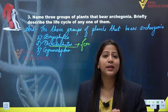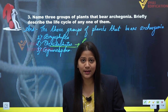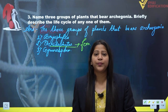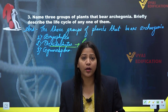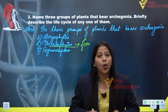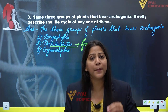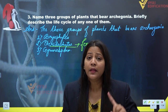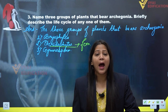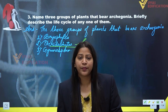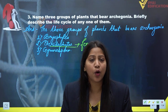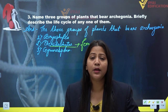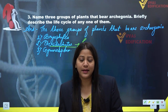This gametophyte in the case of pteridophytes is known as the prothalus and is haploid in nature. When the haploid gametophyte or prothalus develops and matures, it develops two types of sex organs on its own body: the male sex organ, anthridia, and the female sex organ, archegonia. The anthridia produce male gametes or antherozoids, and the archegonia produce egg cells.